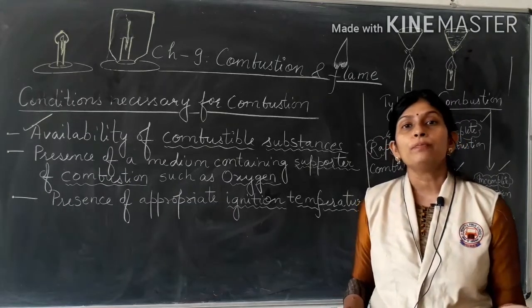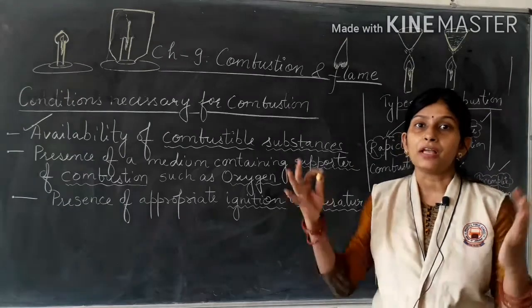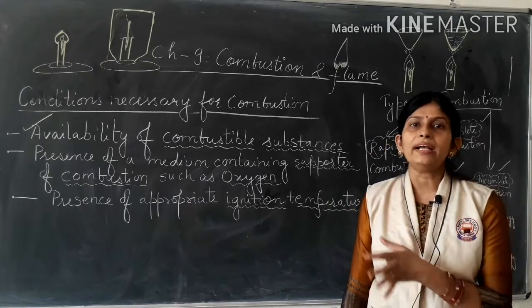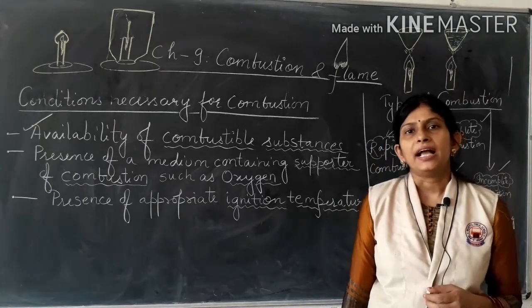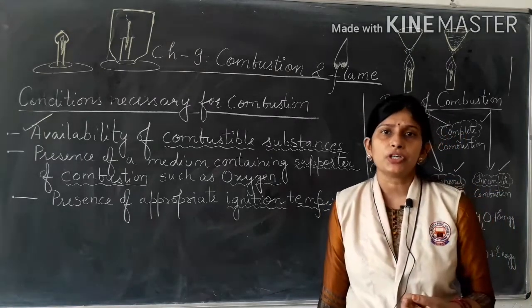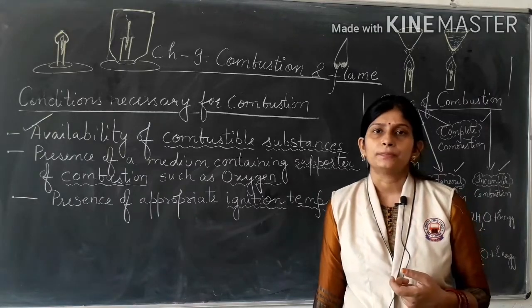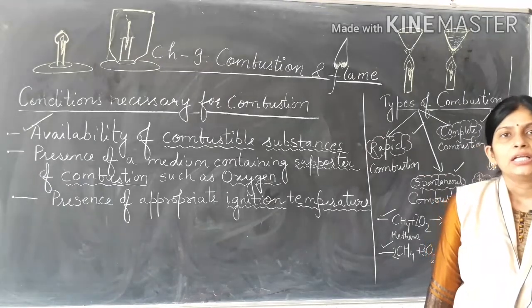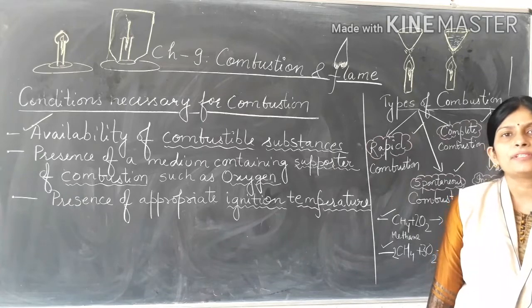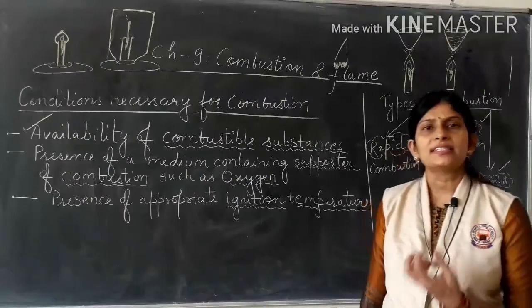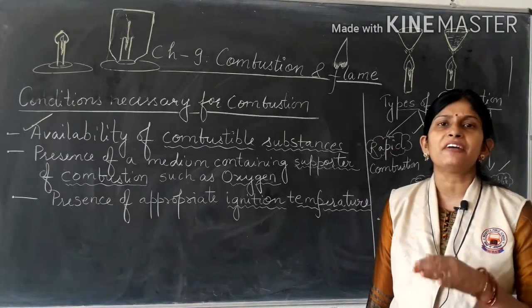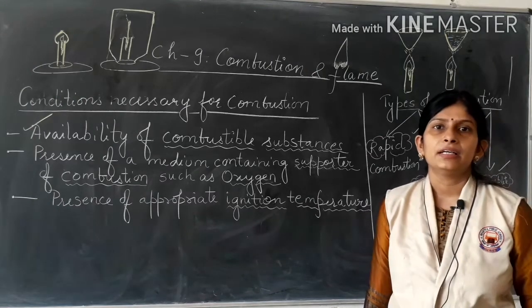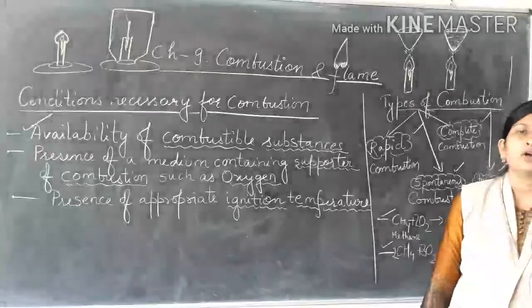Many times rapid combustion can result in huge fires, so we have to take great care while dealing with it. An extremely rapid combustion is known as explosion. For example, LPG and CNG are inflammable substances which catch fire or start burning in the presence of oxygen at a very low ignition temperature, rapidly — so they undergo rapid combustion.